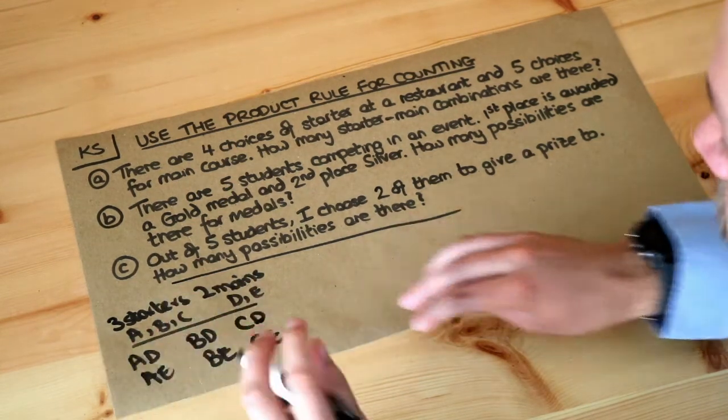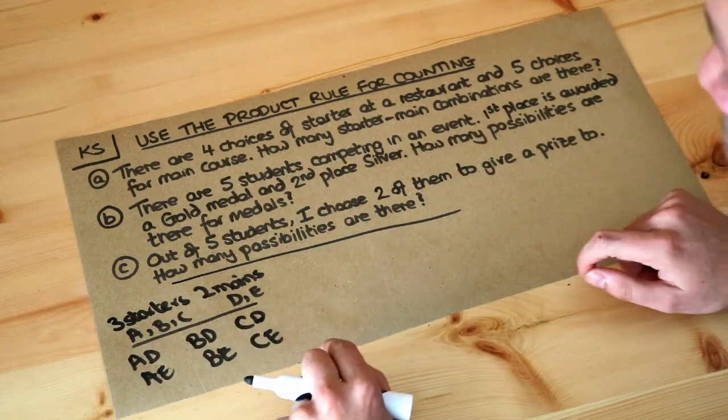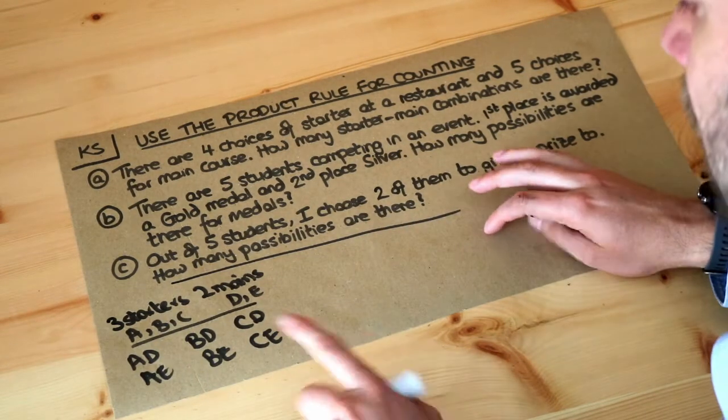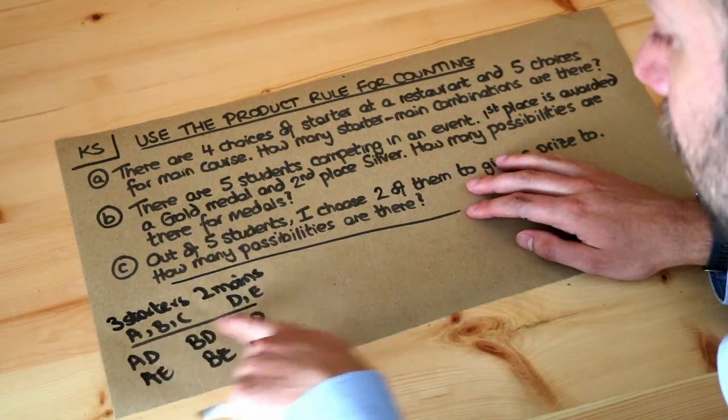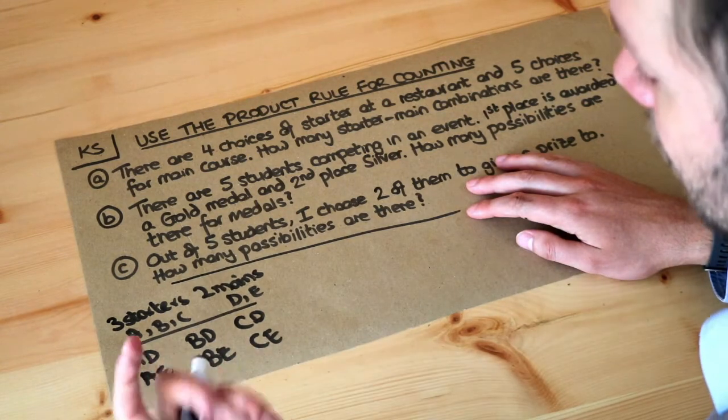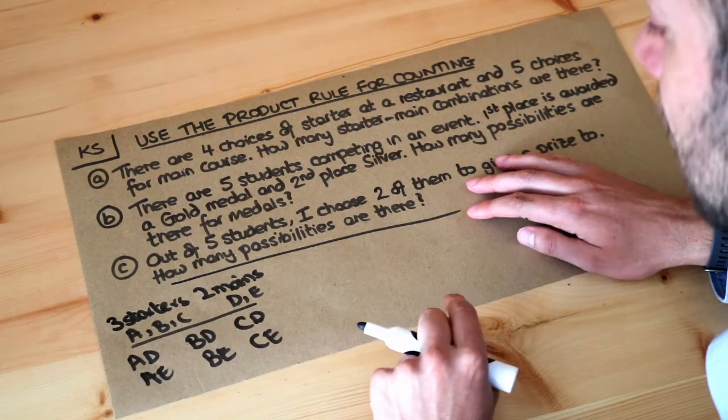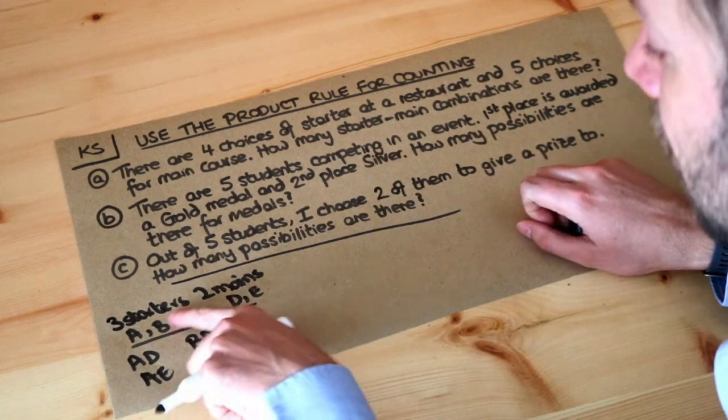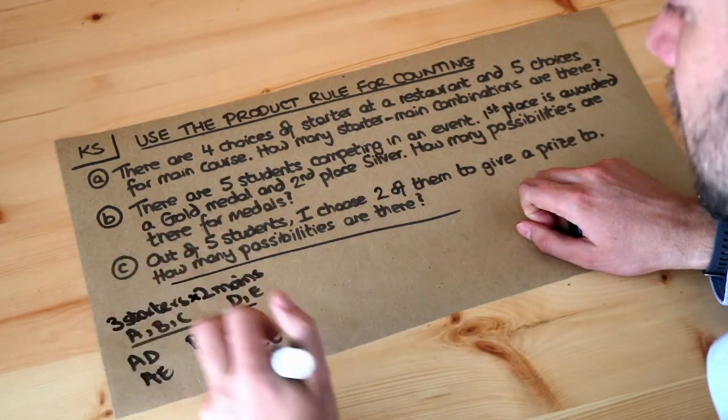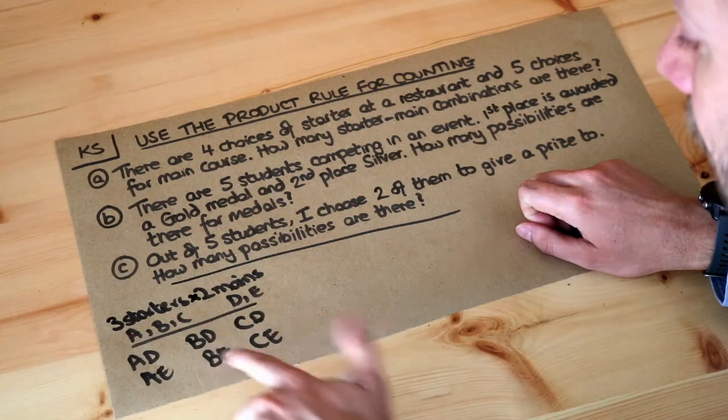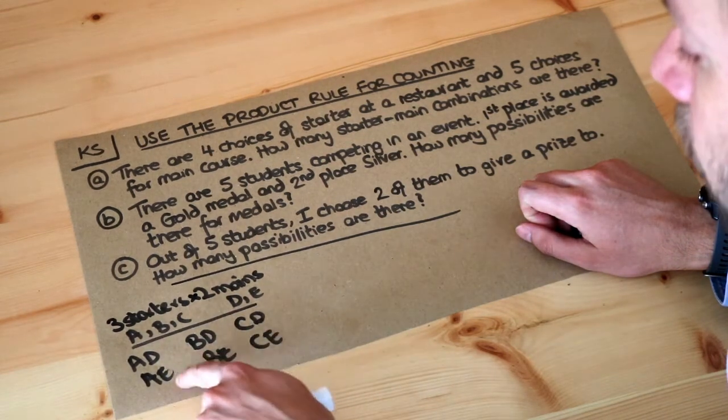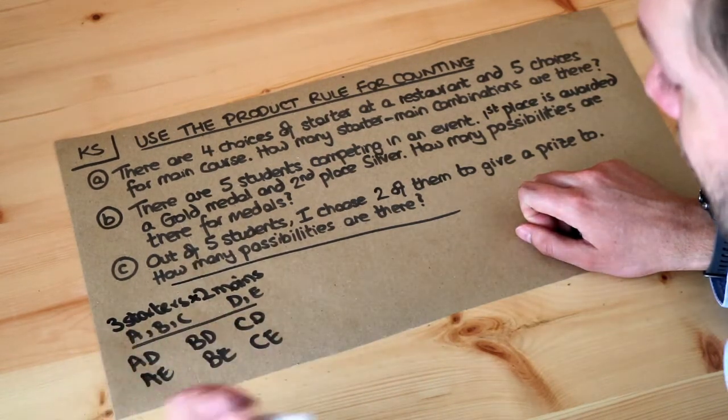So we looked at that in a previous video where we could list out all the possible combinations of two things, but can you see that we get this sort of three by two grid and that gives us two times three which is six possibilities. So basically if you want to combine two things together we can just times them together. Three times two gives you six and indeed you can see with this three by two grid we get six possibilities.